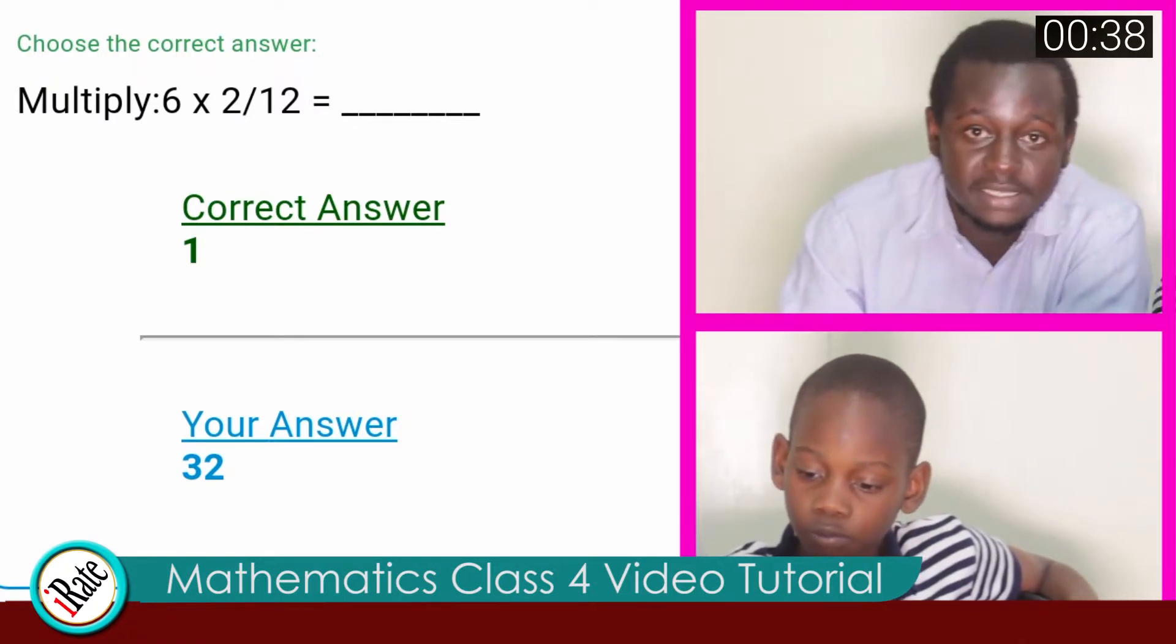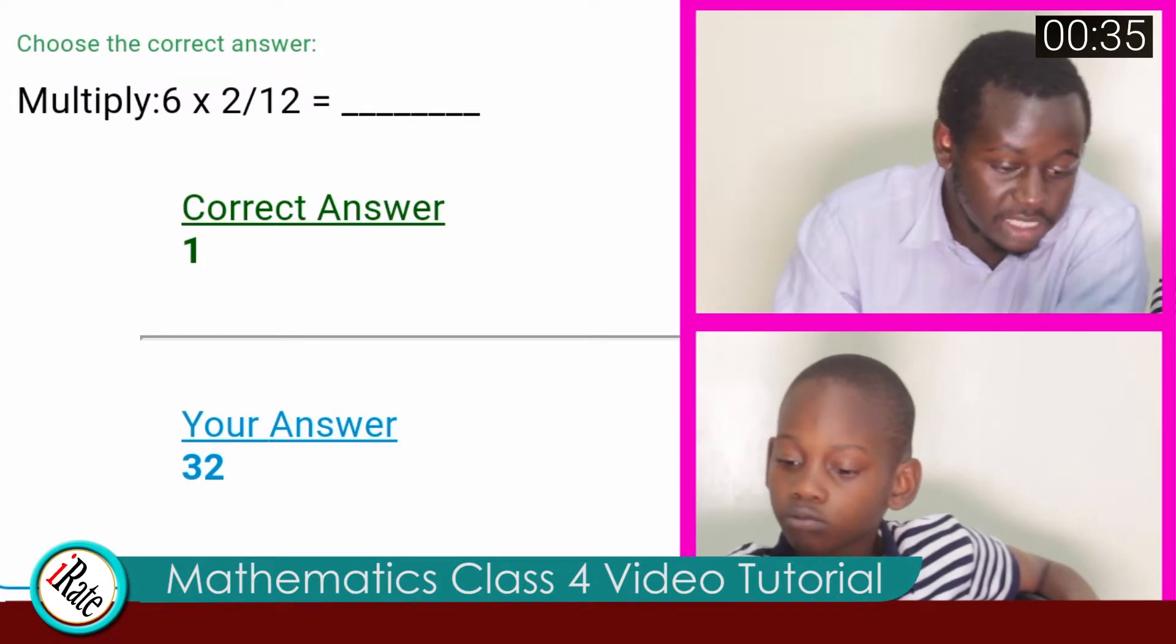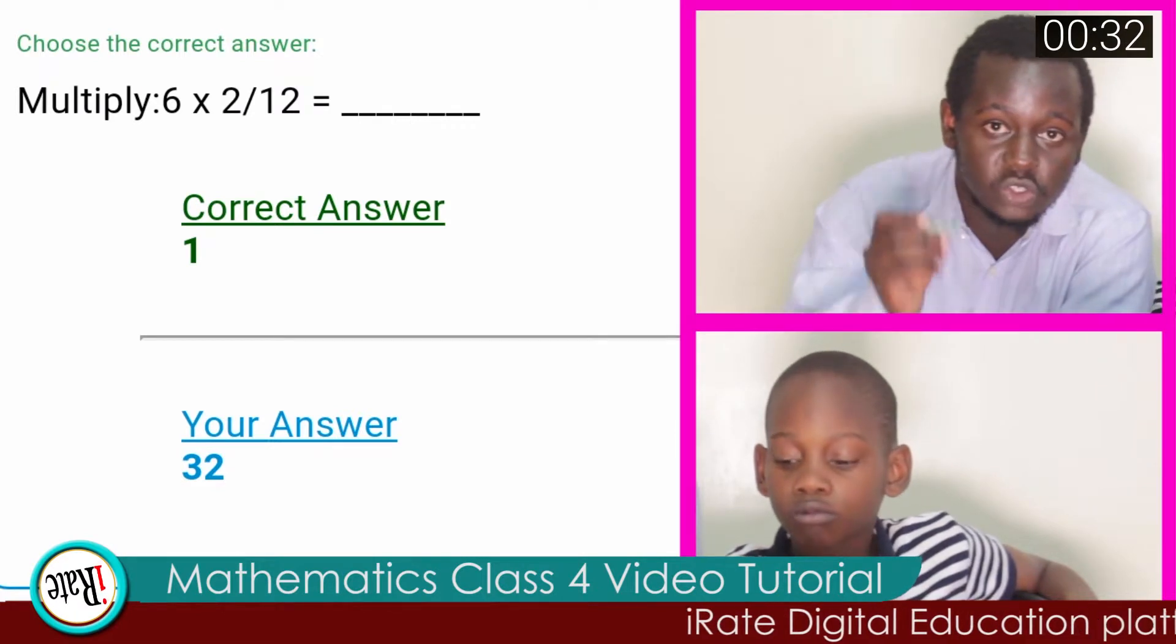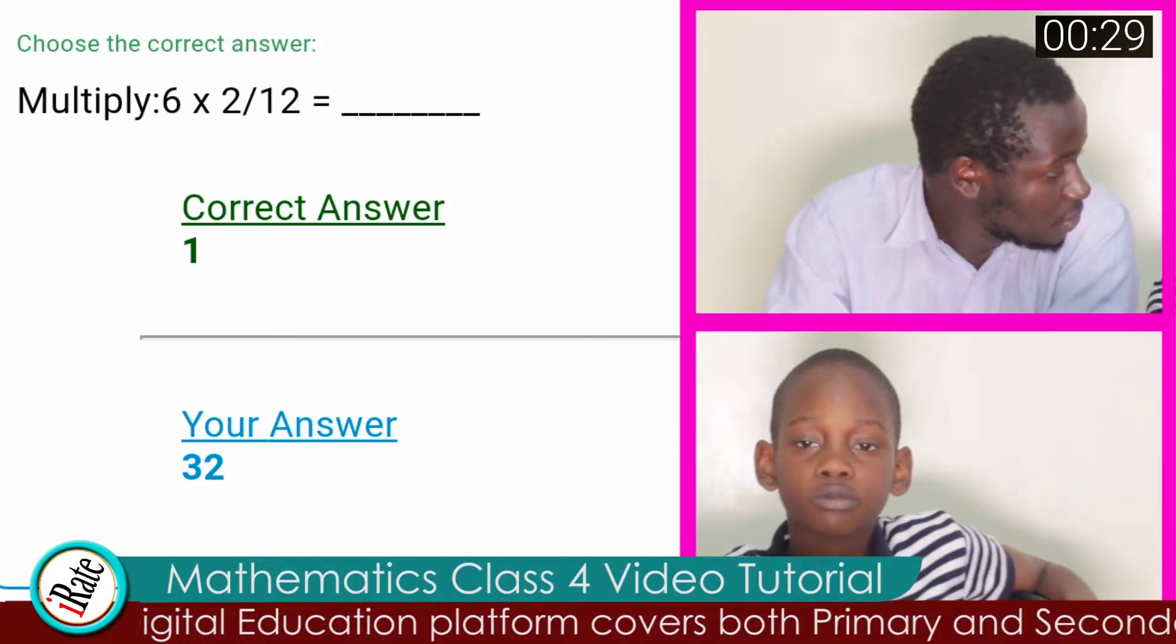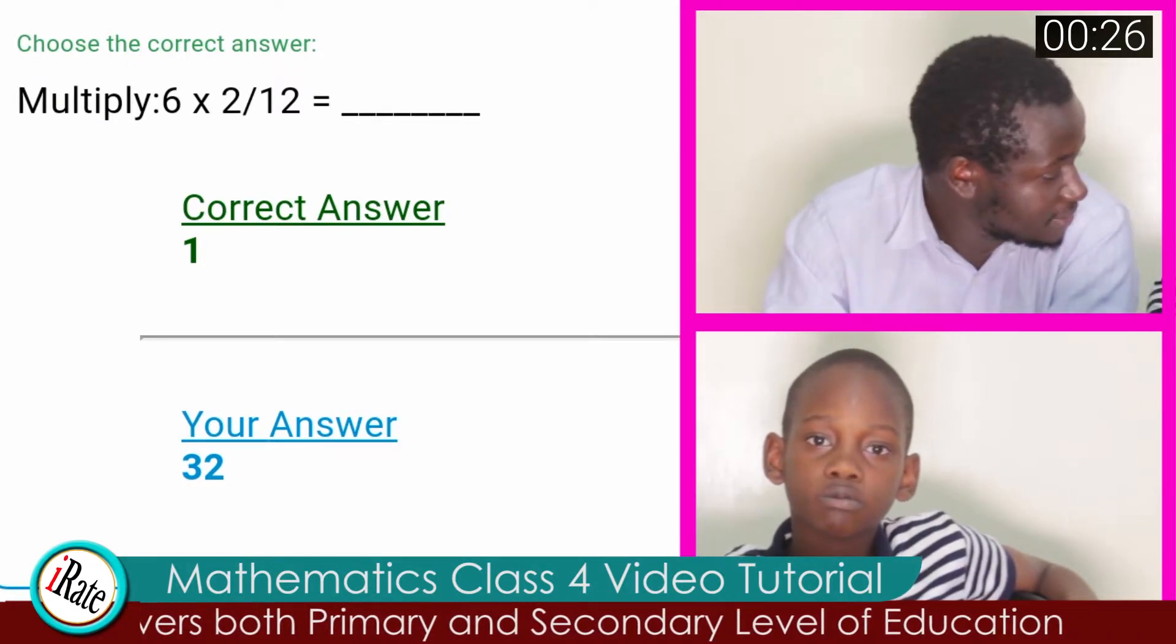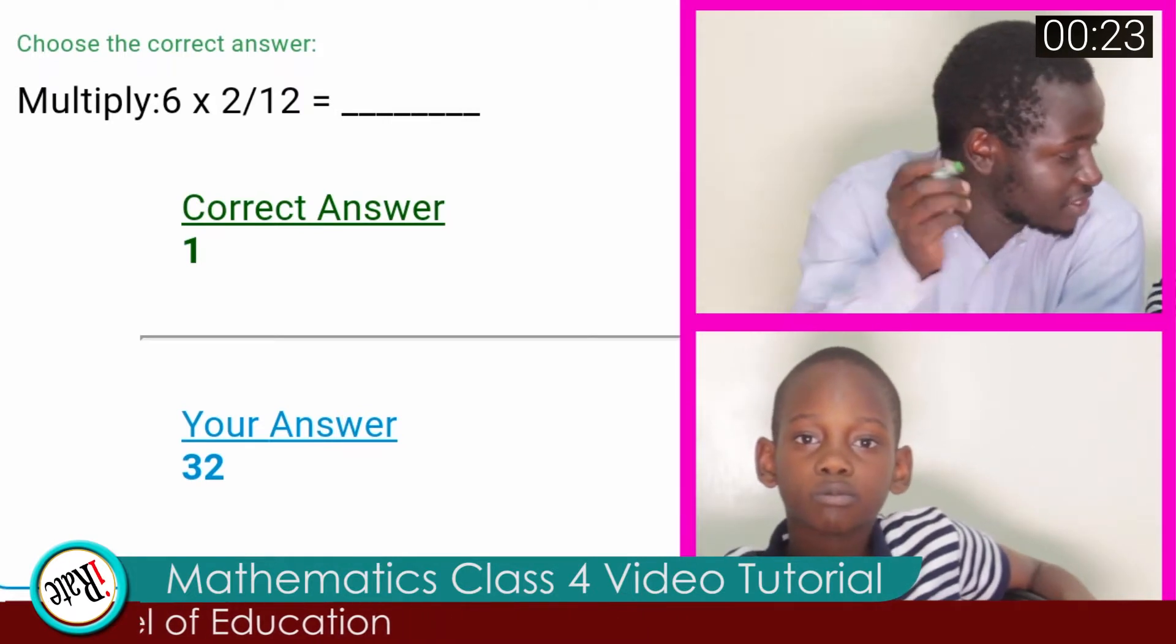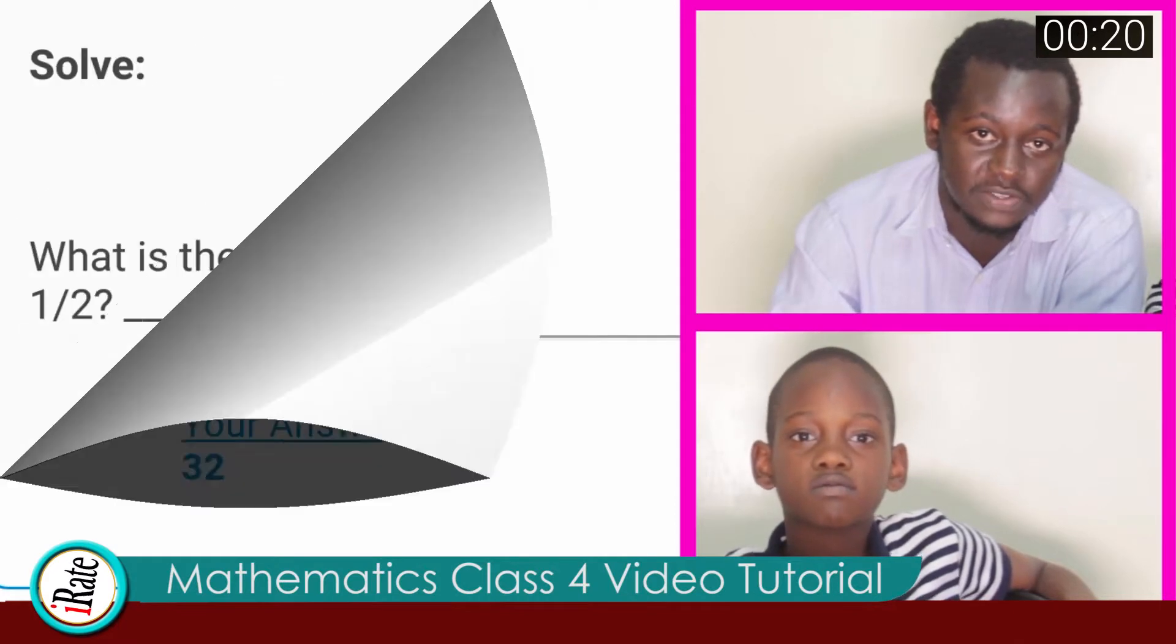When you multiply six times two over twelve, you can simplify the number first, the equation, the fraction. That means two divided by two is one. Then two divided by twelve is six, right? Yes. So, six cancels the other six. So, we remain with what? One. One is the correct answer.